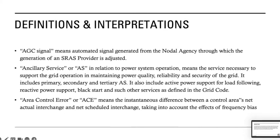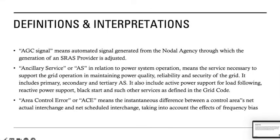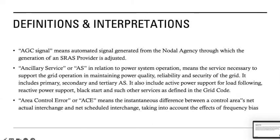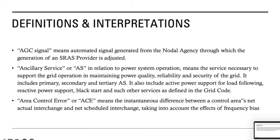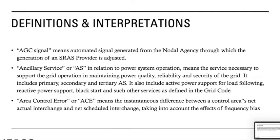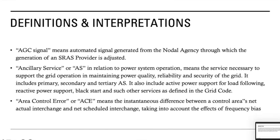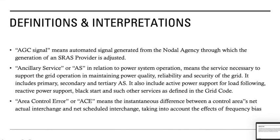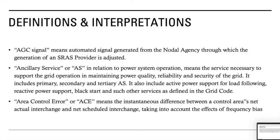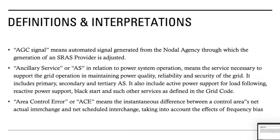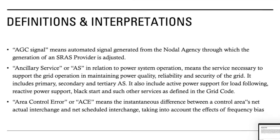Basically, it means that the ancillary service provider would have limited control on its generation. The grid has the option to increase 10 MW, 20 MW, 30 MW or decrease 10 MW, 30 MW or any number, as per the maximum operating capacity of that unit. So the grid can basically ramp that unit up and down in order to maintain the frequency. The signal which is generated would be called the AGC signal.